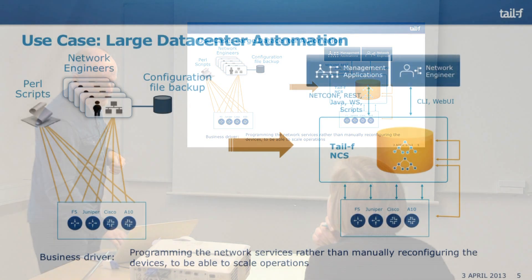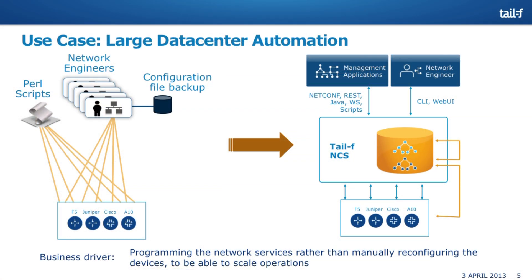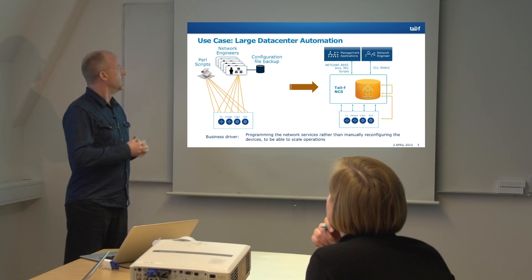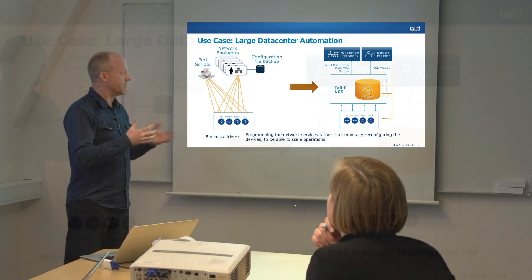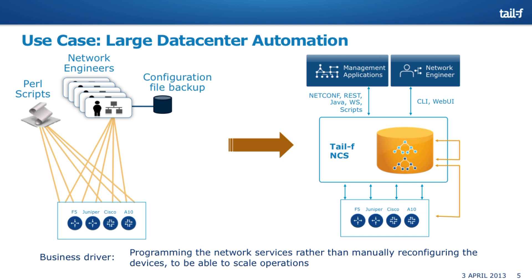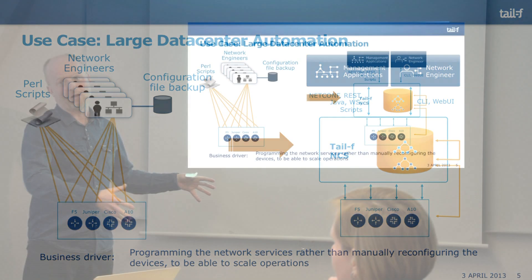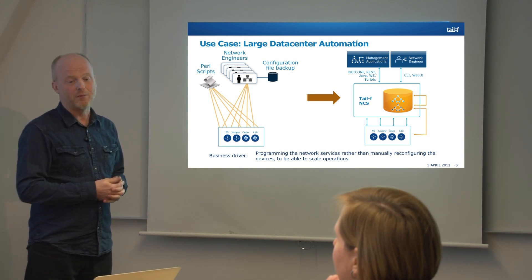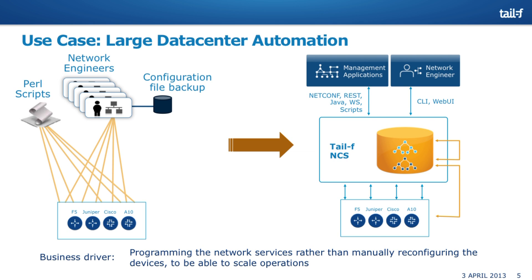How is NCS typically used? Let's look at a specific use case: a typical data center with a mix of different vendors. What's the current state of affairs with configuration management? Most customers we come to work today with a lot of engineers using native CLI towards different vendors, and they have a central configuration file backup — a read-only database where they pull the configs and store them in a backup system. They typically have hundreds or thousands of Perl scripts doing CLI screen scraping to establish services in the network. This doesn't scale.